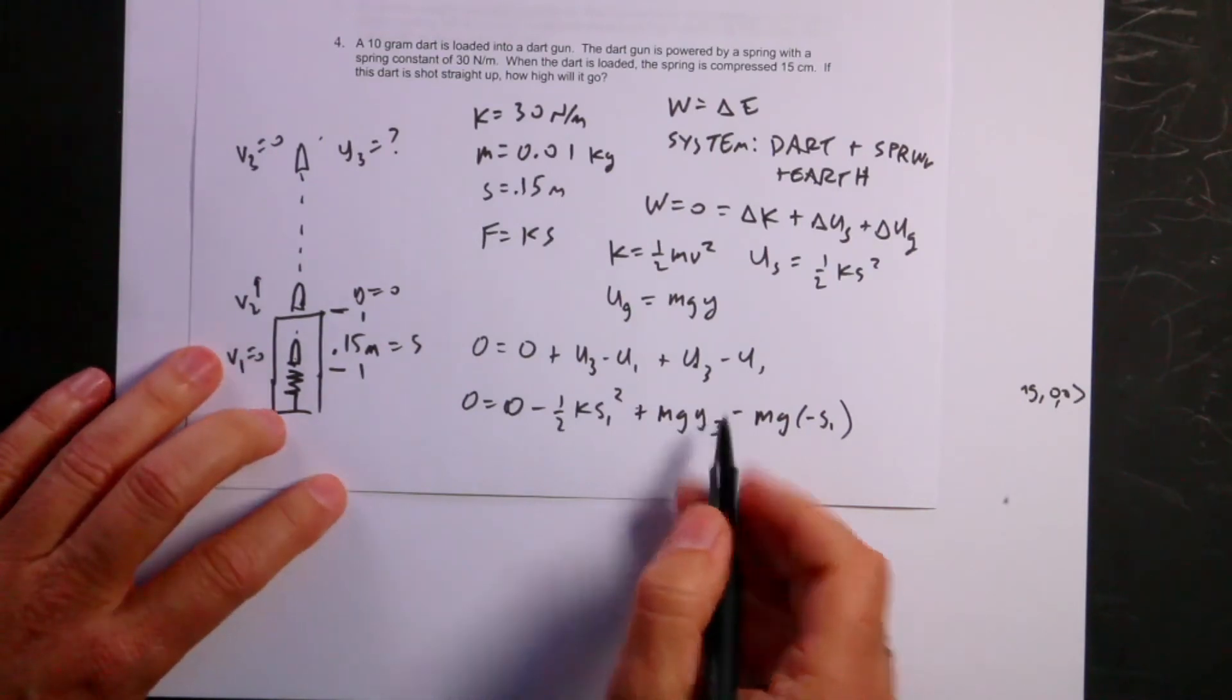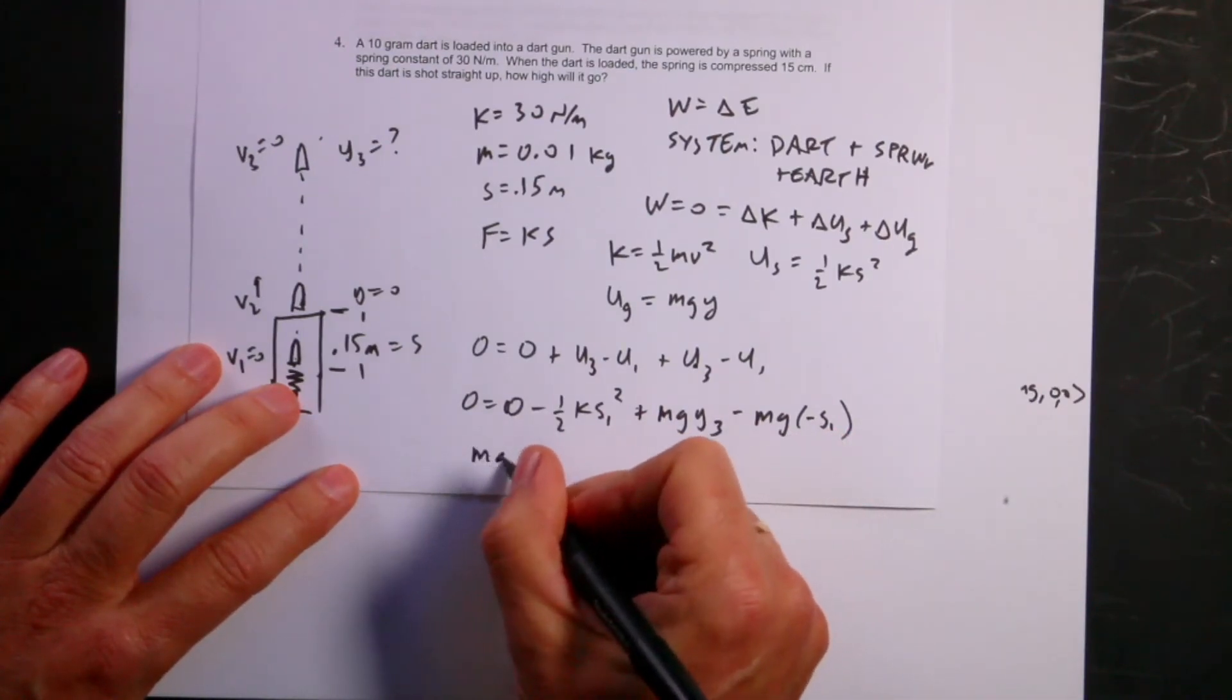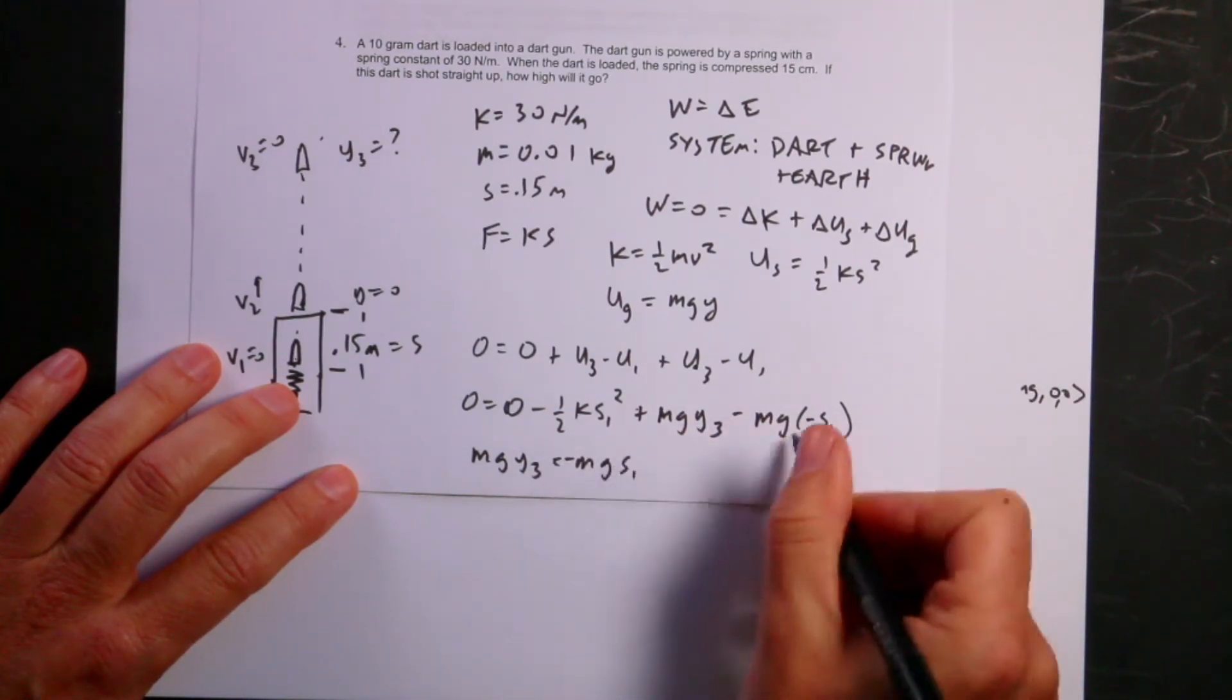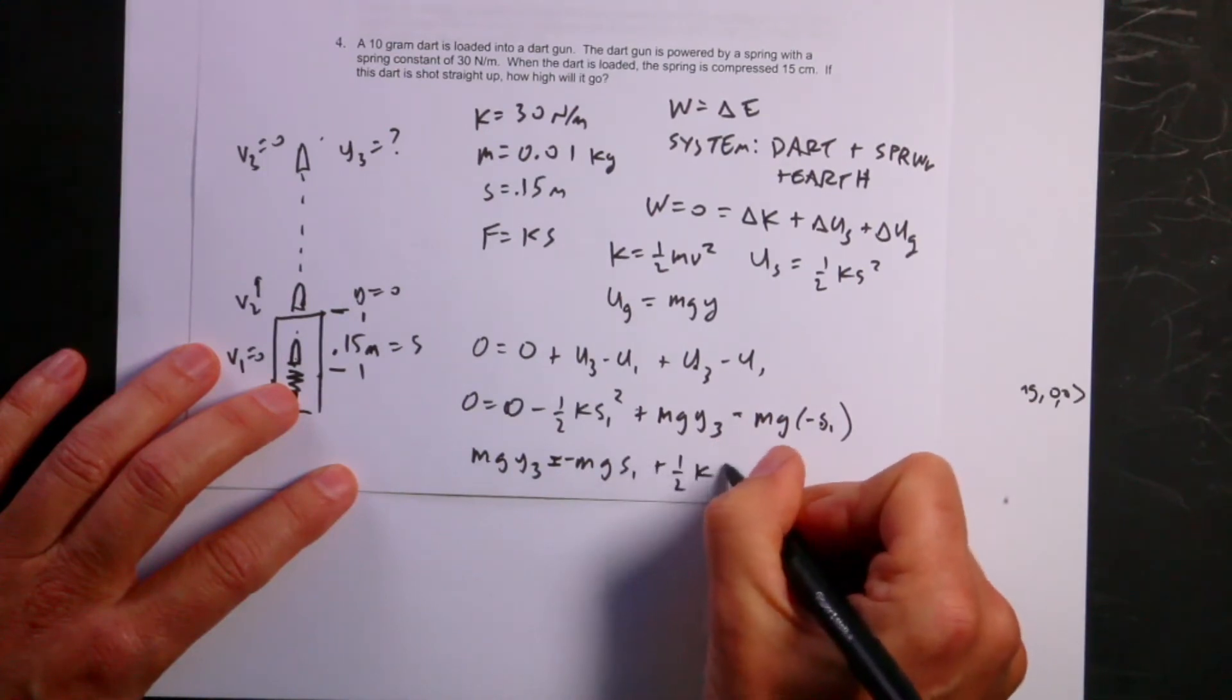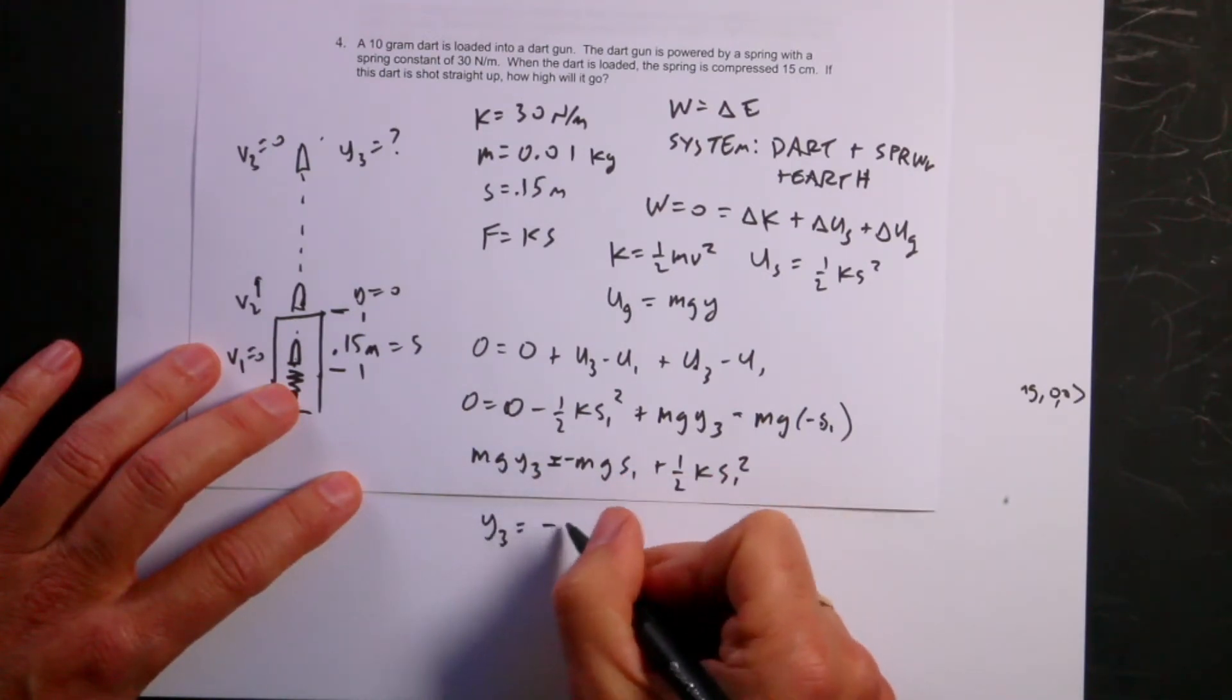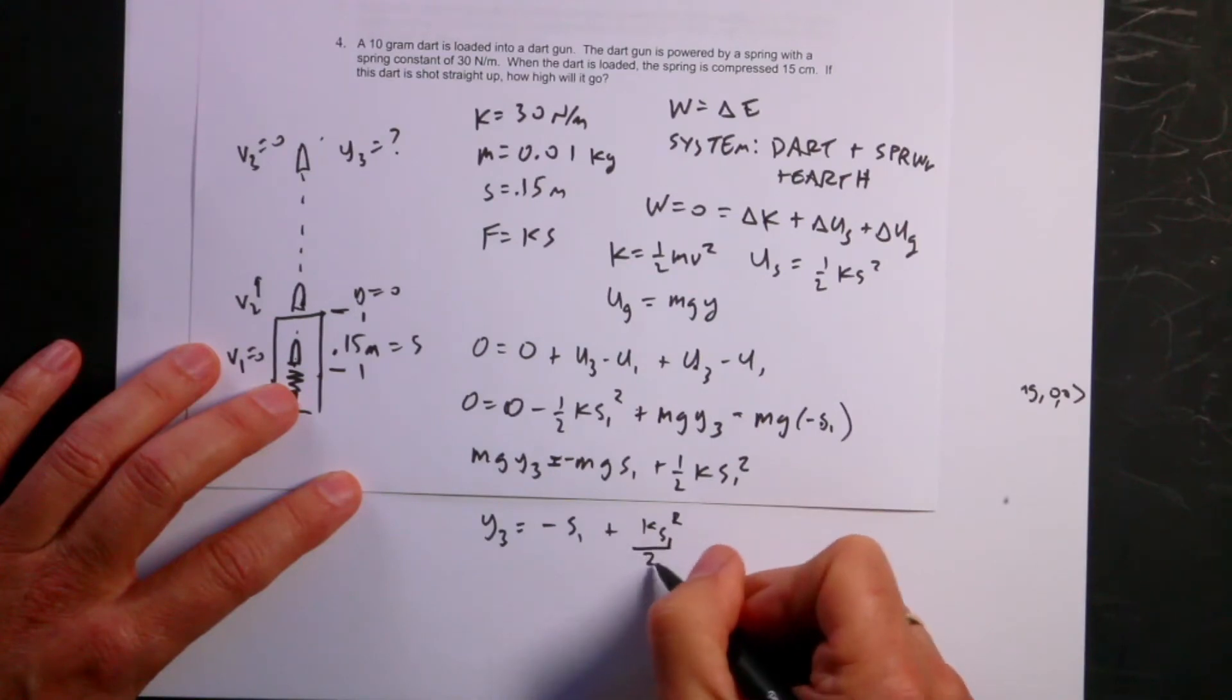Now I want to solve this for y3. So I get mg y3 equals negative mg s1 plus one half ks1 squared. Because those make positive and move to the other side, it's negative. Now if I solve that for y3, I get y3, divide everything by mg, I get negative s1 plus ks1 squared over 2mg.